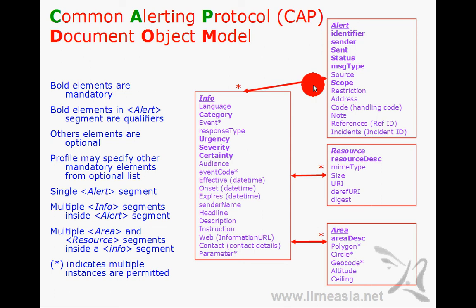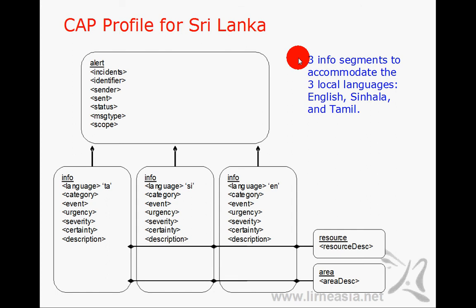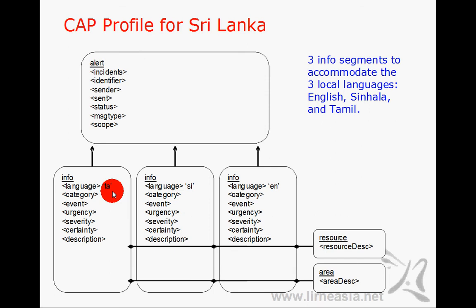The tags or fields in bold are qualifying and mandatory elements, but implementers can decide which other values to make mandatory based on their requirements. This example shows how a profile is created for Sri Lanka, with a single alert segment and three info segments carrying information in Tamil, Sinhala, and English — each with their own resource and area segments.